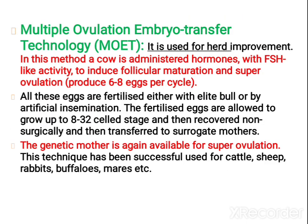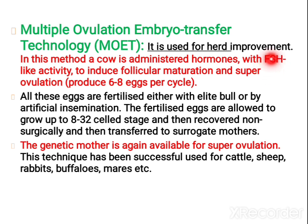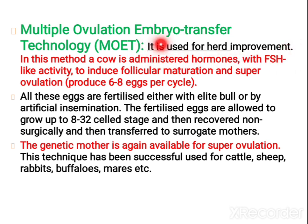Next, let us study regarding Multiple Ovulation Embryo Transfer technology, or MOET. From the name itself you can understand — embryo transfer technology by means of multiple ovulation. The first step is multiple ovulation, which is done by administering FSH, that is follicle stimulating hormone, to achieve super ovulation. Super ovulation means production of 6 to 8 eggs per cycle.